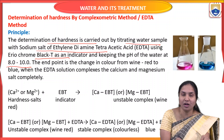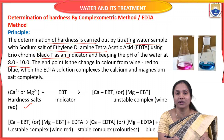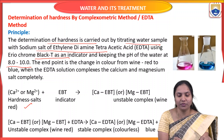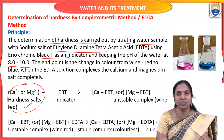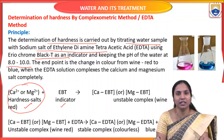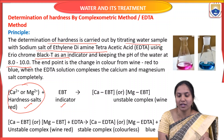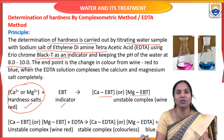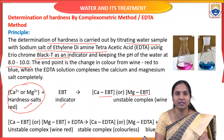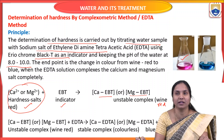In the hard water, hardness-causing ions like Calcium and Magnesium are present. When EBT indicator is added to this hard water, it forms Calcium-EBT or Magnesium-EBT unstable complexes. The color of the solution becomes wine red. This hard water solution is then titrated with EDTA from the burette.